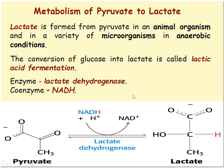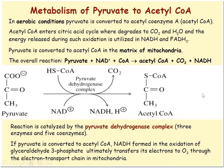Lactate is formed from pyruvate in animals and various microorganisms under anaerobic conditions. The conversion of glucose into lactate is called lactic acid fermentation, catalyzed by lactate dehydrogenase. NADH + H⁺ is converted back to NAD⁺, while pyruvate converts into lactate. This can occur in our muscle cells during rigorous exercise, when an oxygen-free situation is suddenly created inside the cell.